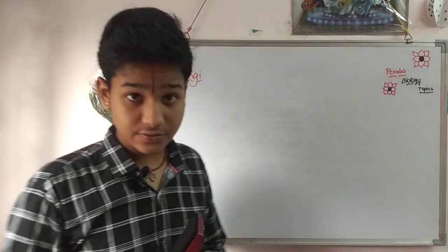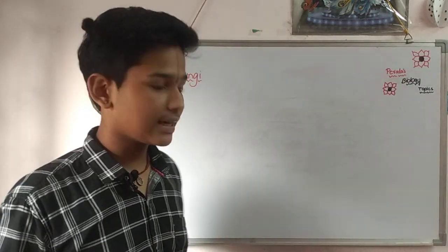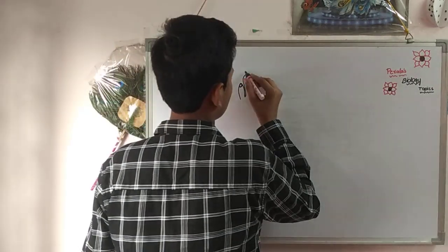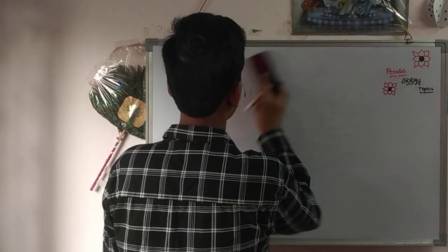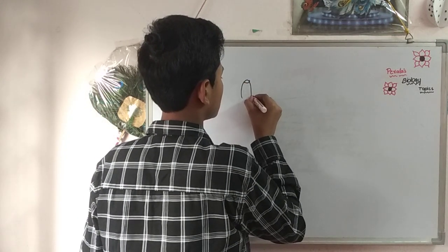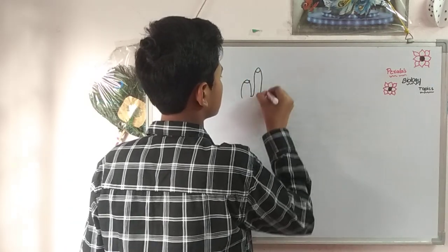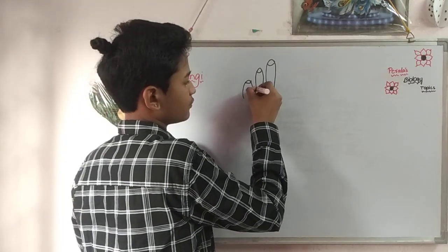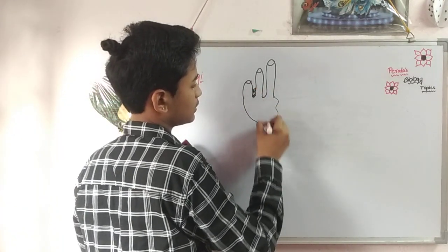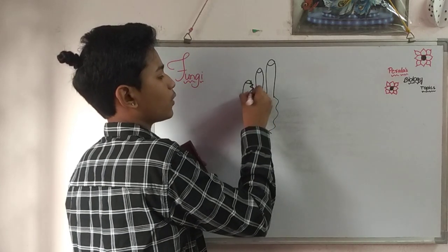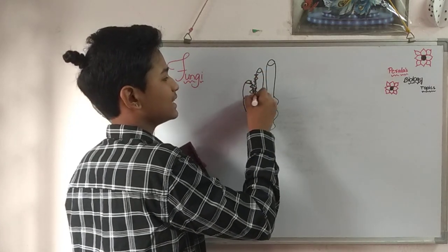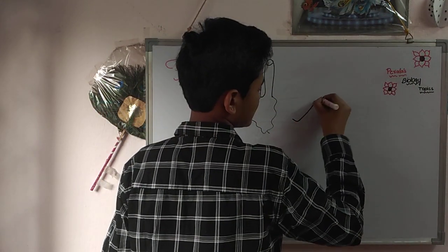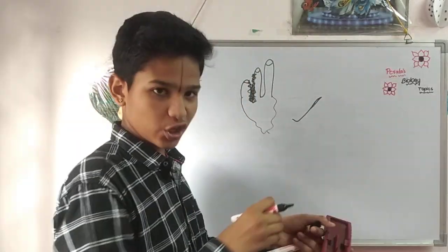There are some parasitic fungi which develop between your toes. A fungus can grow between the toes of your leg, feeding on the skin there, and some fungi cause itching on your body. These are parasitic fungi.